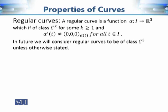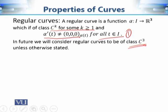The next important property is regular curves. We impose the condition that alpha is differentiable, but this alone is not sufficient. Two further conditions are required: first, the derivative alpha'(t) must not vanish — it should not equal (0,0,0) for any t in I; and second, alpha must belong to Cᵏ for some k ≥ 1, meaning it is k times differentiable. In differential geometry of curves in R³, we typically take curves to be of class C³.